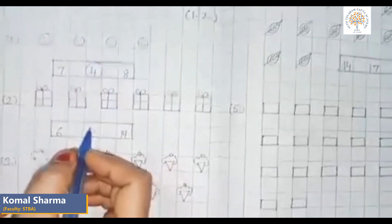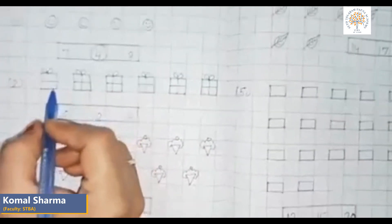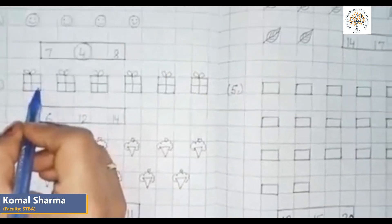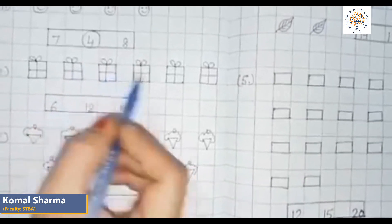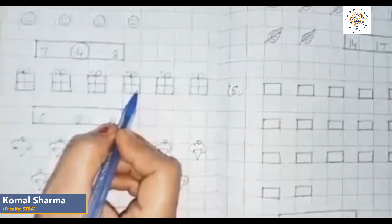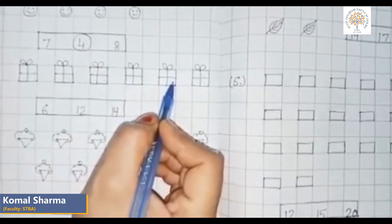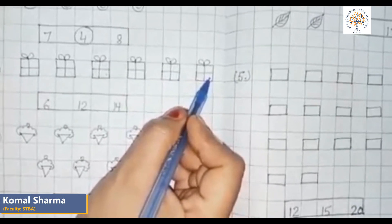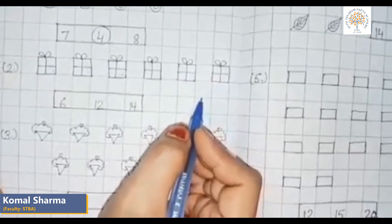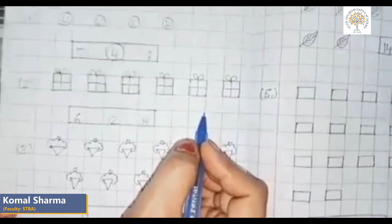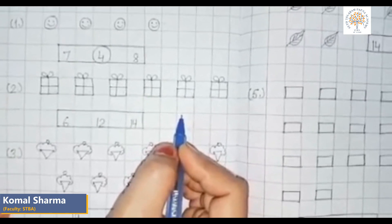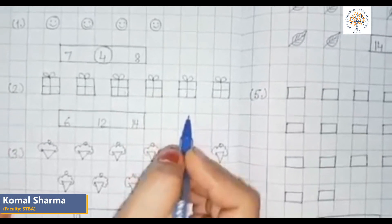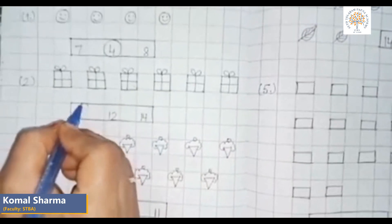Let us count the boxes. How many boxes are there? Let us count: one, two, three, four, five, six. There are six boxes. How many boxes are there? Six. The right answer is six. We will circle the number six.